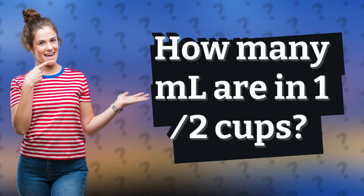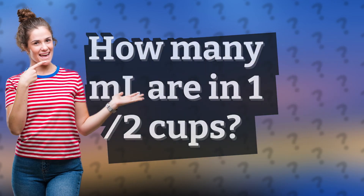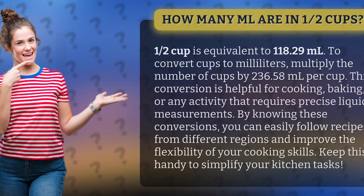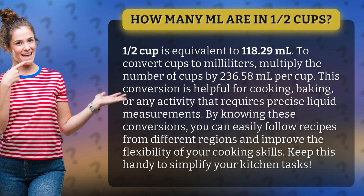How many ml are in ½ cup? ½ cup is equivalent to 118.29 milliliters. To convert cups to milliliters, multiply the number of cups by 236.58 milliliters per cup.